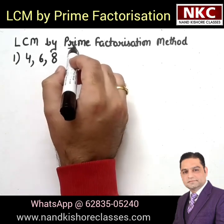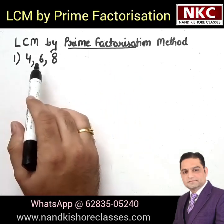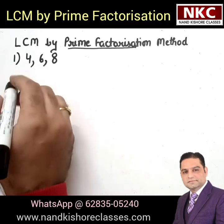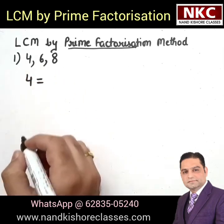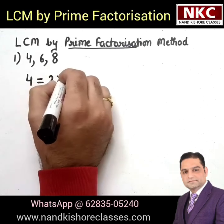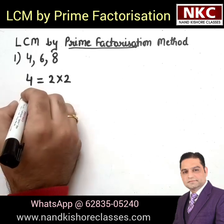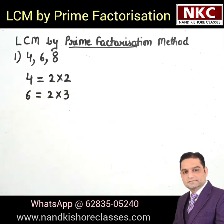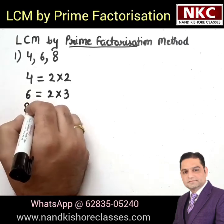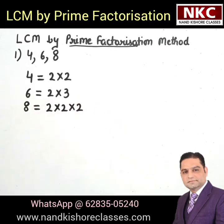First of all, we should understand what is prime factorization. Prime factorization means expressing a number into product of its primes. For example, 4 can be written as 2 times 2. This is the prime factorization of 4. 6 can be expressed as 2 times 3, and 8 can be expressed as 2 times 2 times 2. This is what we need to do first — expressing all the numbers into product of their primes.